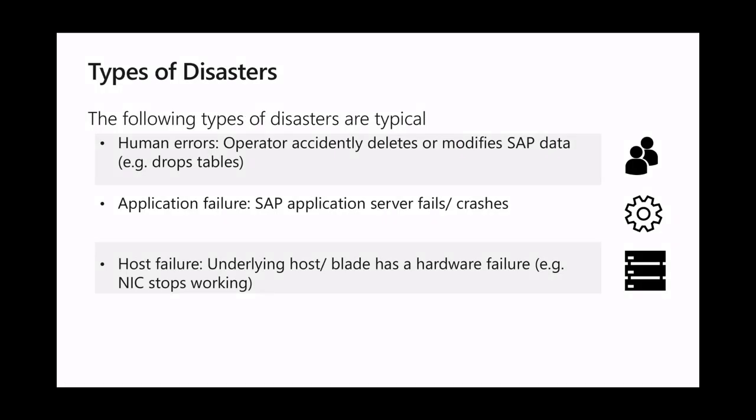When we look at the types of disasters that may impact the operations of an SAP system, we usually look at the following. Human errors are the most common, where an operator, for example, would delete vital SAP data, leaving the system in an unusable state. Also common are application failures where parts of a NetWeaver application stack becomes unavailable or simply freezes. Also common are host failures where the underlying host infrastructure of an SAP system or virtual machine has a critical error and becomes unresponsive.